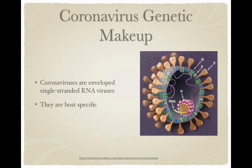The coronavirus genetic makeup. Coronaviruses are enveloped single-stranded RNA viruses. If you look at the picture on the right, on the bottom left you'll see an arrow pointing to the RNA, and then the RNA is protected by nucleocapsid proteins. The whole entire thing is surrounded by an envelope — you'll see an E pointing to the envelope on the top right. On the envelope you have membrane proteins and spike proteins. Another thing to note is that coronaviruses are host-specific.